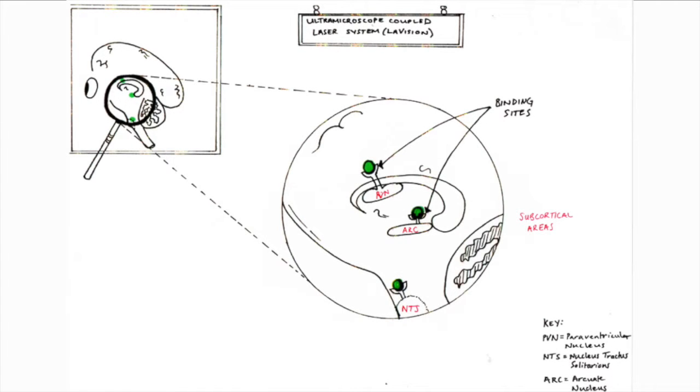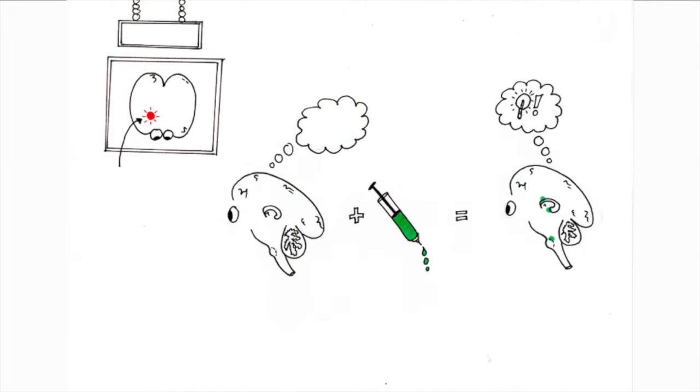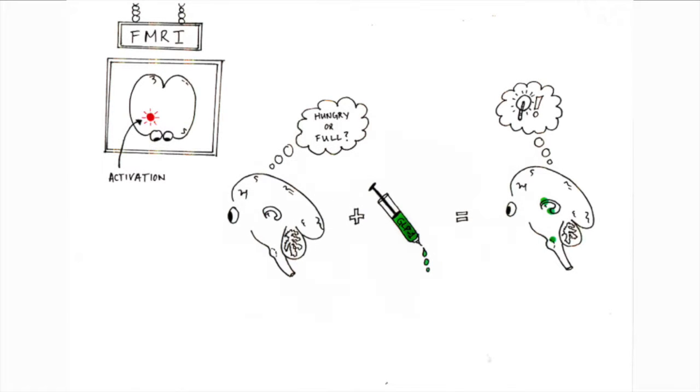such as the arcuate nucleus, where our hunger and fullness signals are situated. However, just because the analogue binds doesn't mean the GLP-1 activates the subcortical areas of the brain.